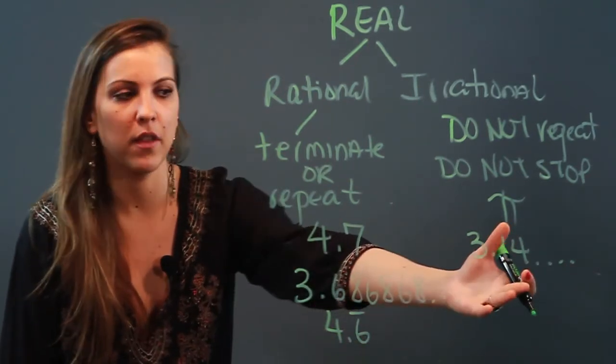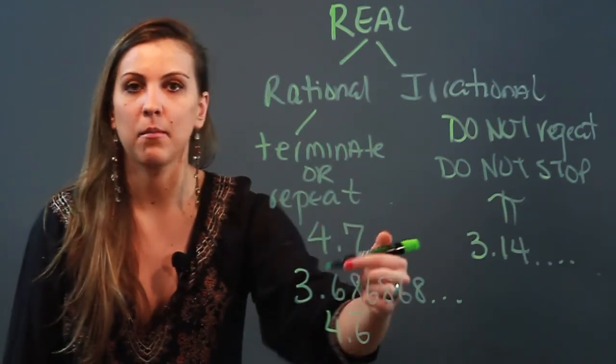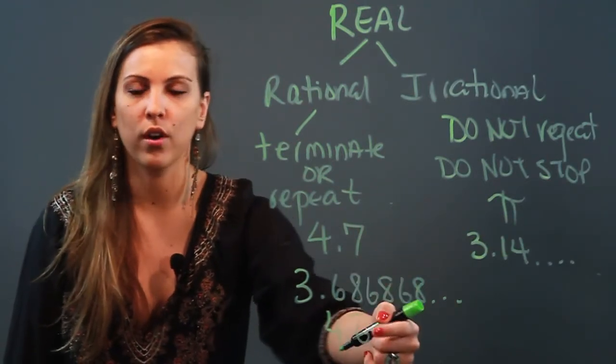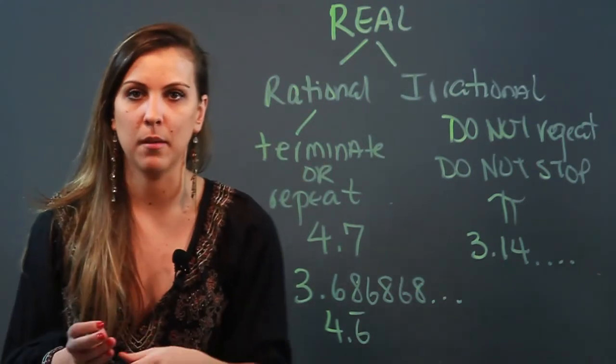Okay, so that's an irrational number—a number that never stops, never repeats. And a rational number is a number that either stops or it repeats. That's the difference between rational and irrational, both of which are real numbers.